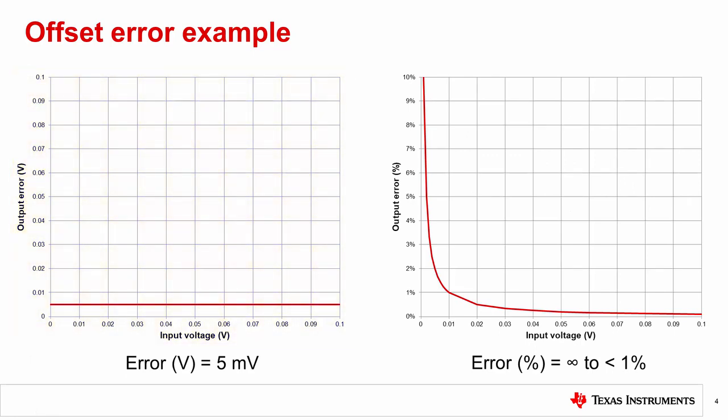The plot on the left shows the output error in volts between the actual and ideal outputs, which is a constant 5 millivolts across the entire input range of 0 to 100 millivolts. Calculating the percent error gives us a much different result. The error becomes large at 0 input voltage, since the error voltage of 5 millivolts is large compared to the ideal output of 0 volts. The error drops significantly with larger input levels, dropping to less than 1% at 10 millivolts of input signal. Designing for a specific operating region can help mitigate these offset errors. Maintaining an input voltage which is significantly larger than the input offset voltage reduces the effect of the input offset voltage on the measurement.